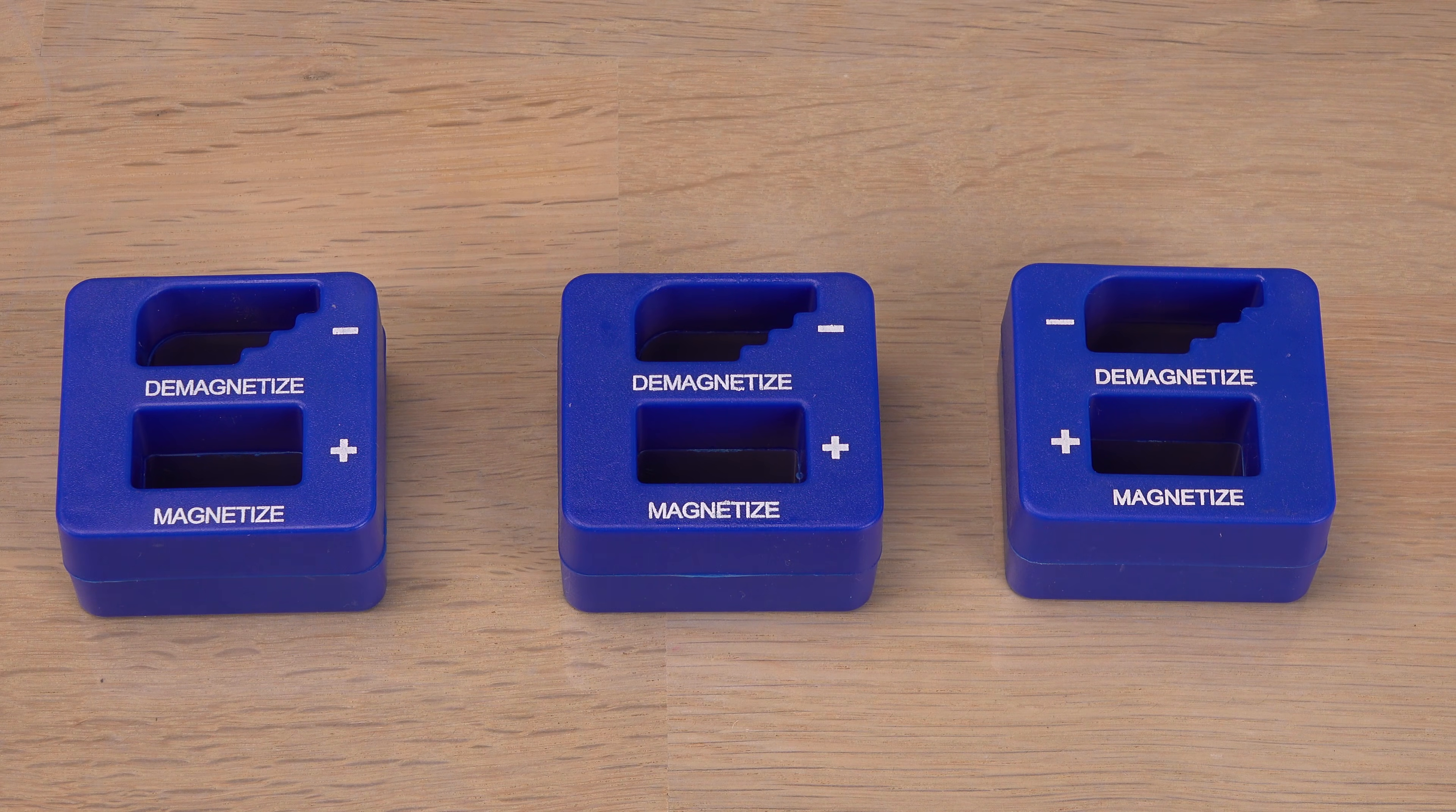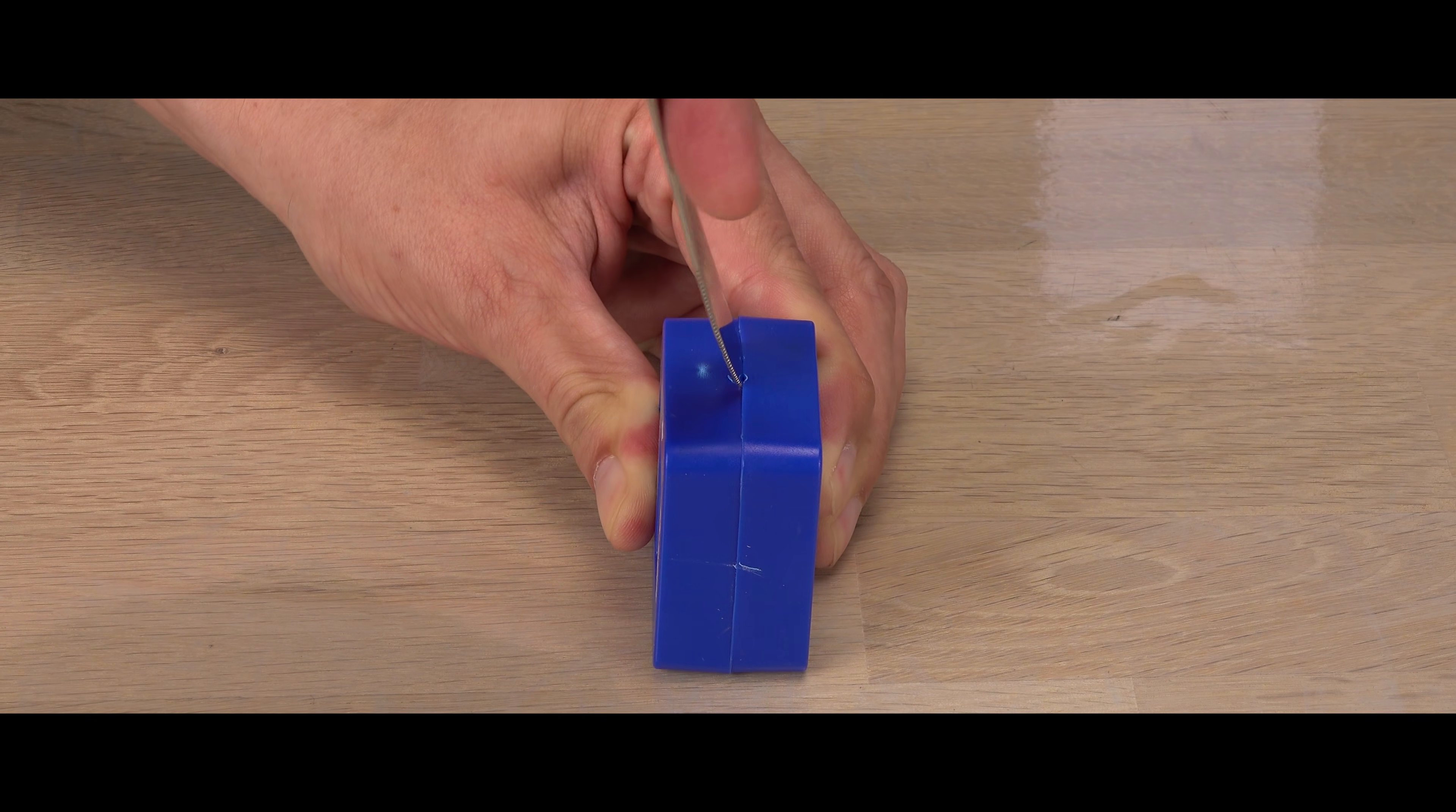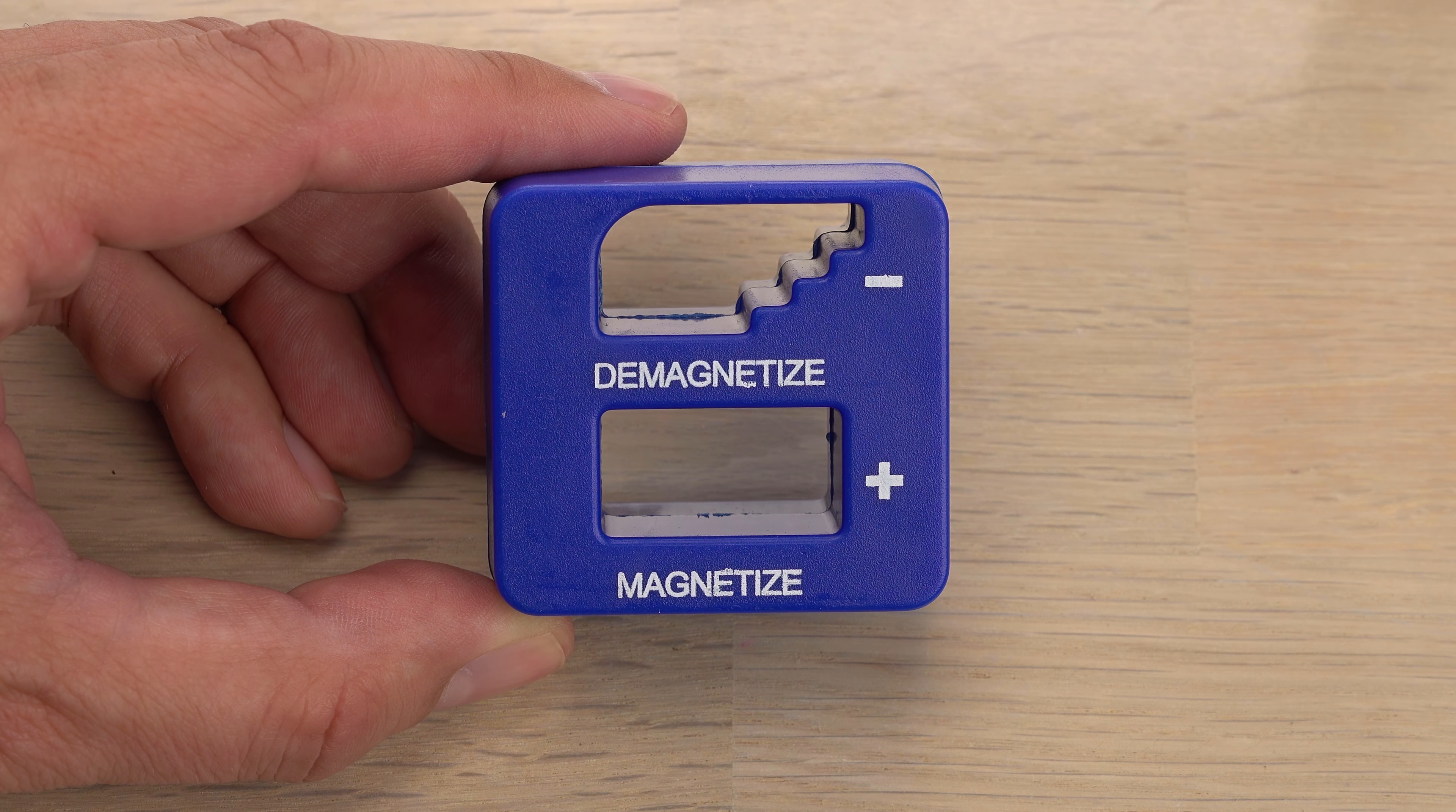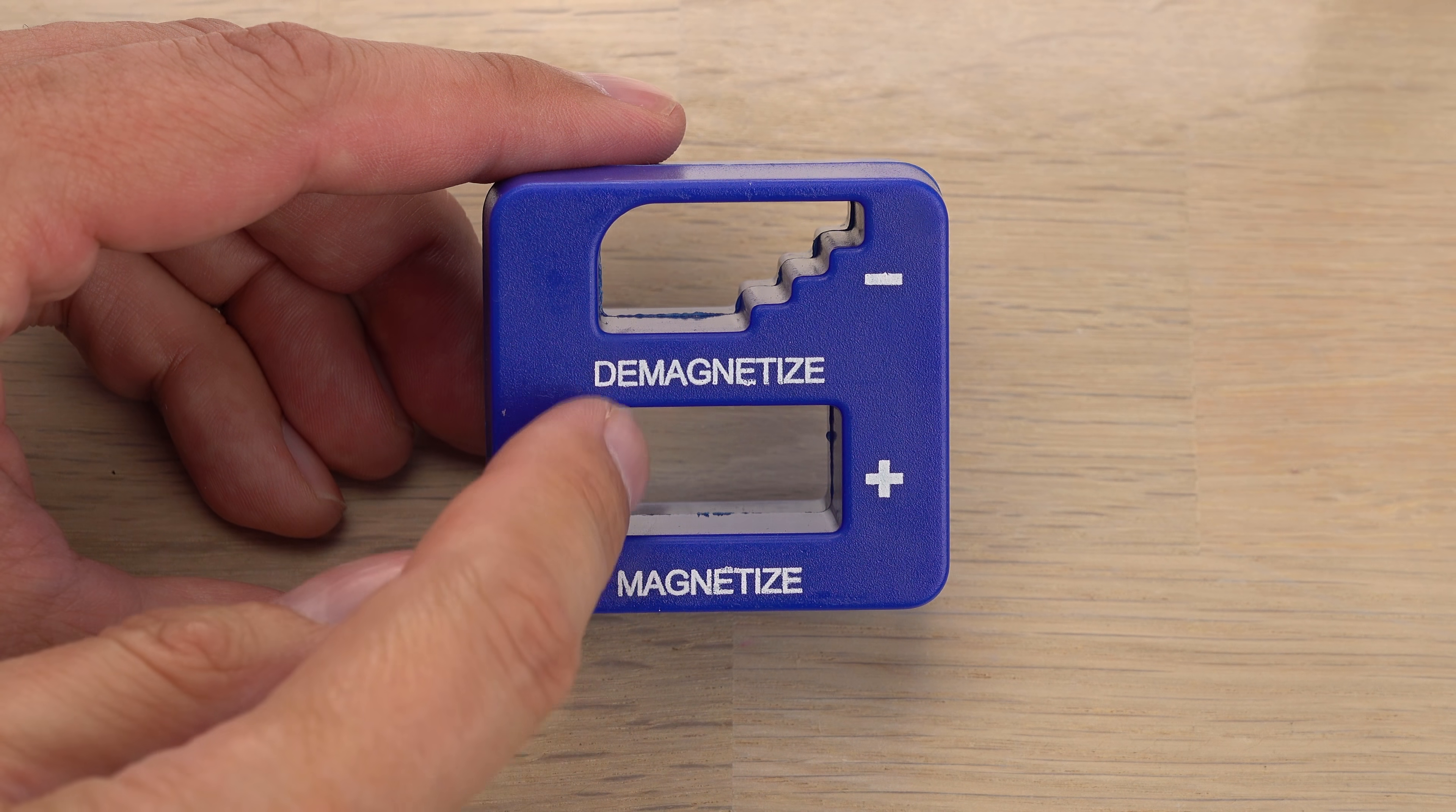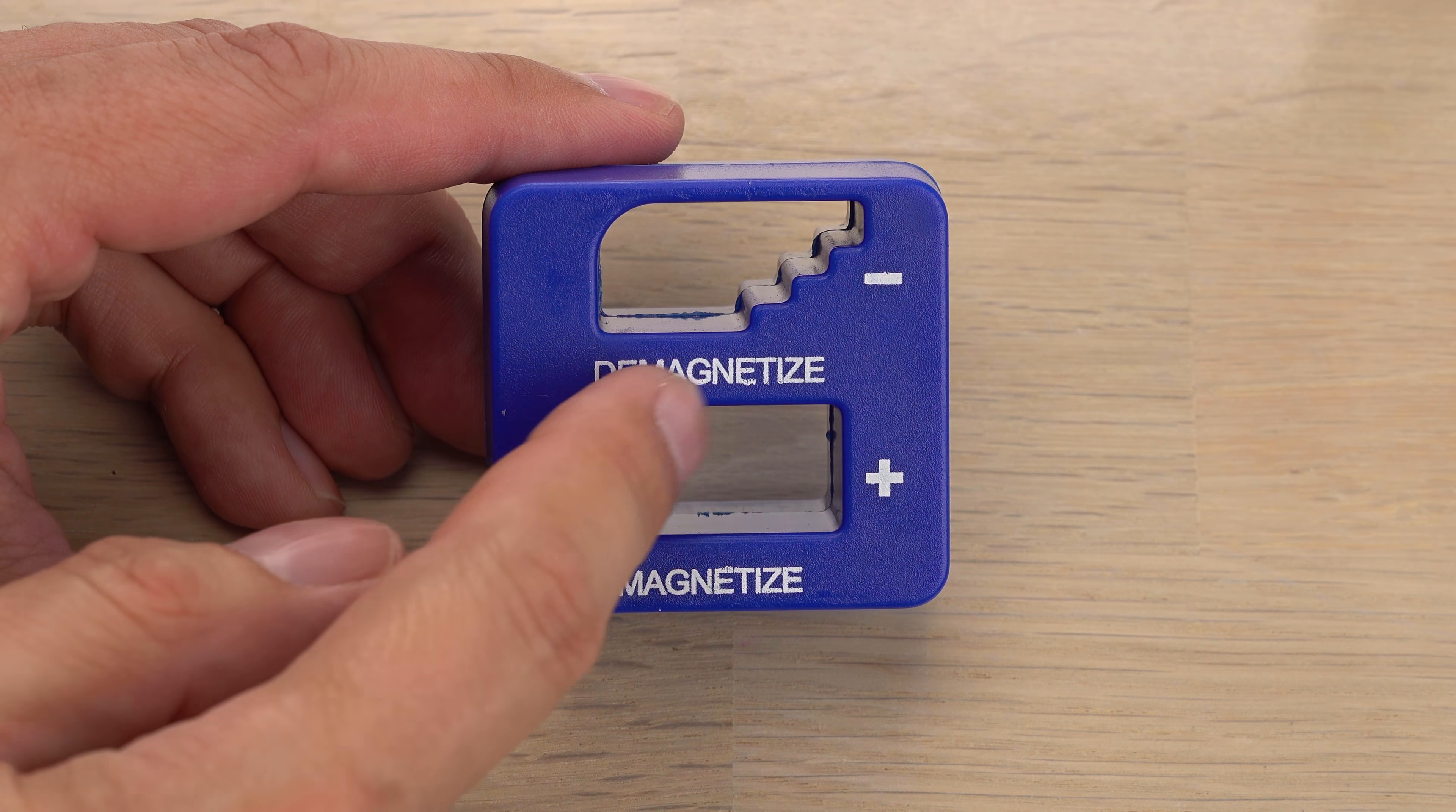Let's look for some clues on how it works before I break it open to reveal its inner workings. The magnetizer part is just a rectangular opening. Nothing special to it.